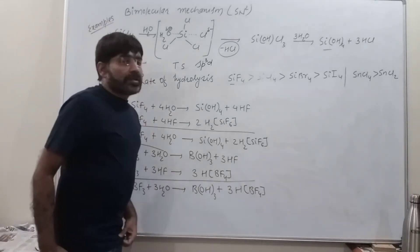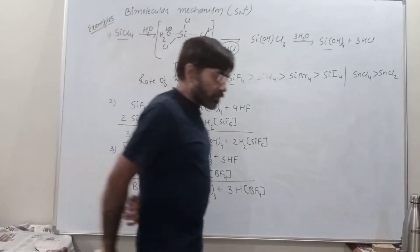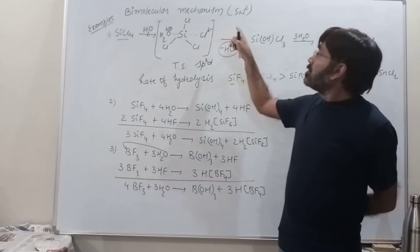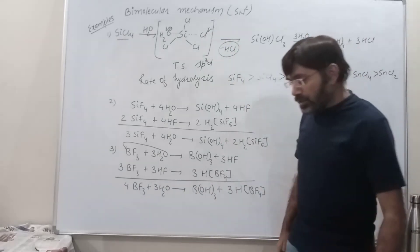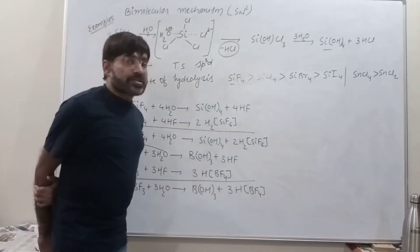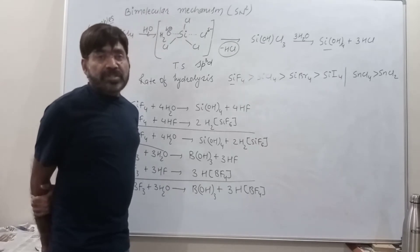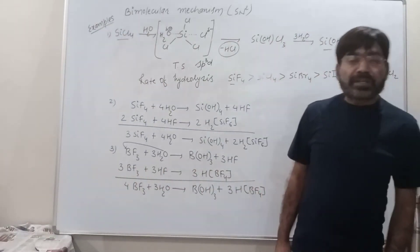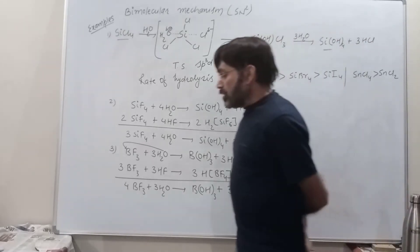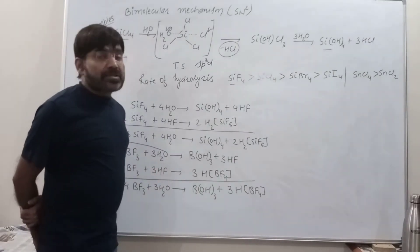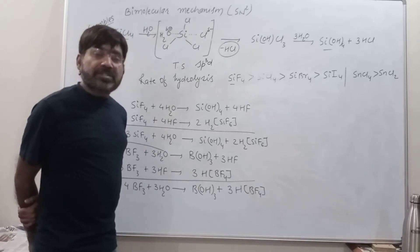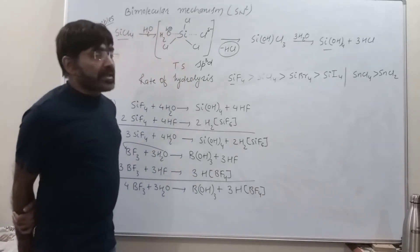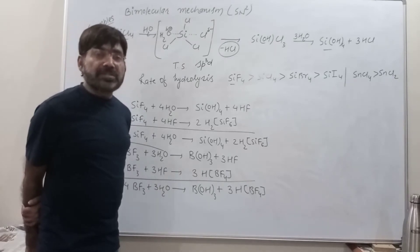Now we are starting the bimolecular mechanism for hydrolysis. The unimolecular mechanism for hydrolysis we have already seen with examples of NF3 and CCl4. In the unimolecular mechanism, reactions proceed through formation of a cation. Here in the bimolecular mechanism, the reaction proceeds through formation of a transition state. This is characteristic of the SN2 mechanism — reactions proceed through a transition state.